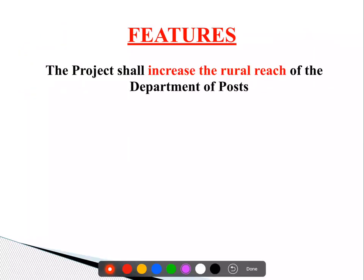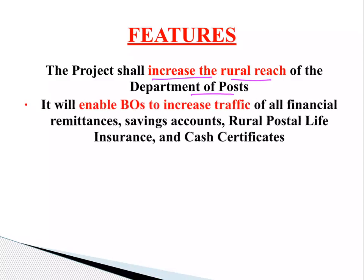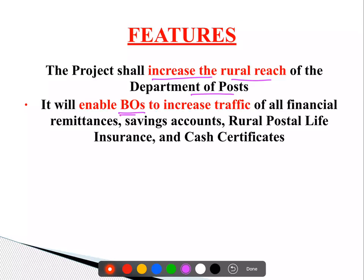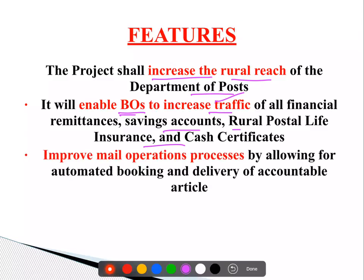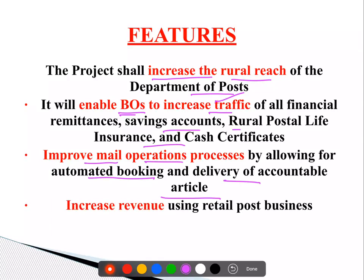Features की बात करें — basically it will help to increase the rural reach of the Department of Posts, और जो हमारे पास branch post offices हैं, उनमें जो financial remittances हैं, savings account हैं, इत्यादि का traffic बढ़ेगा. अब जैसे सब कुछ digitalize हो गया है, branch में ही photograph खींची जाएगी, सारी processes easy हो गई हैं for the customer. यह सब help करेगा mail operations processes को improve करने में — automated booking होगी, delivery of accountable articles जल्दी होगी, और revenue भी increase होगा. So all these features form part of the Darpan project.